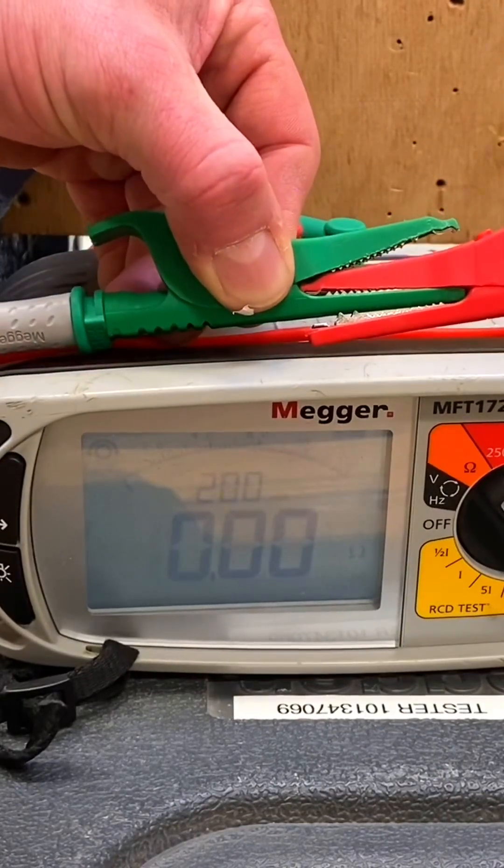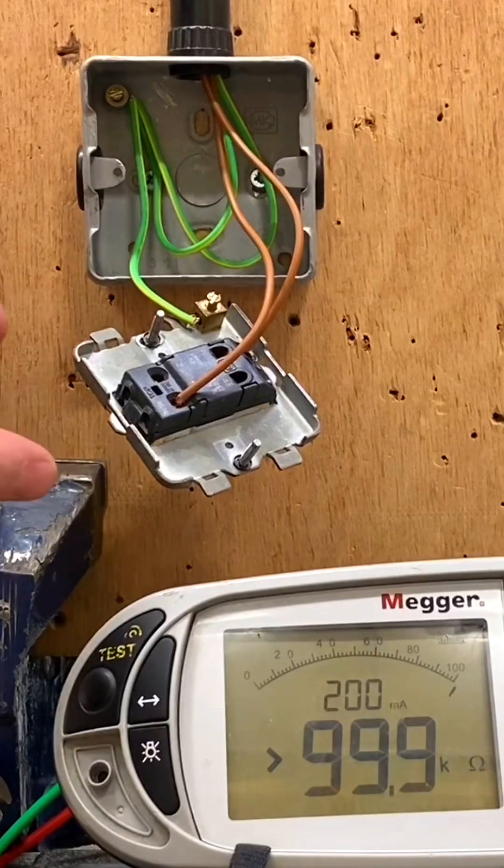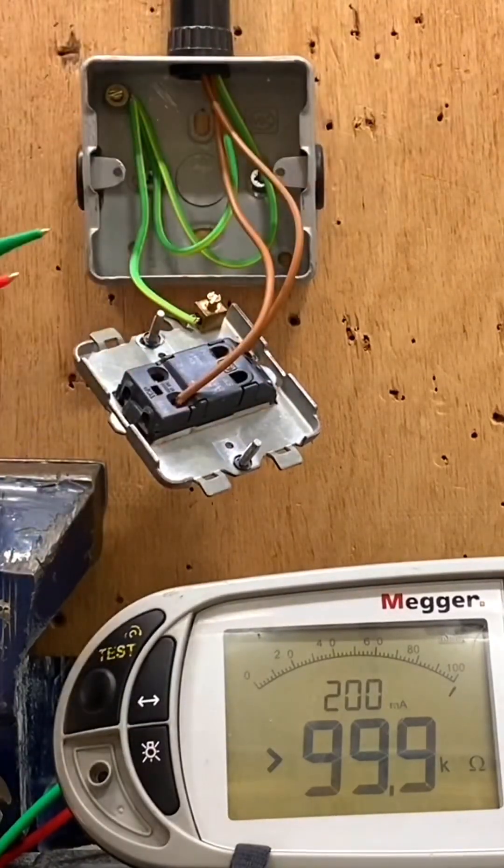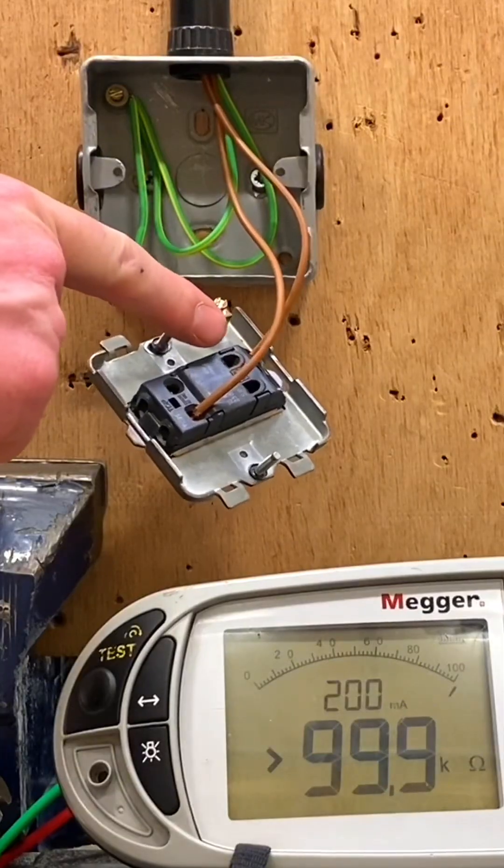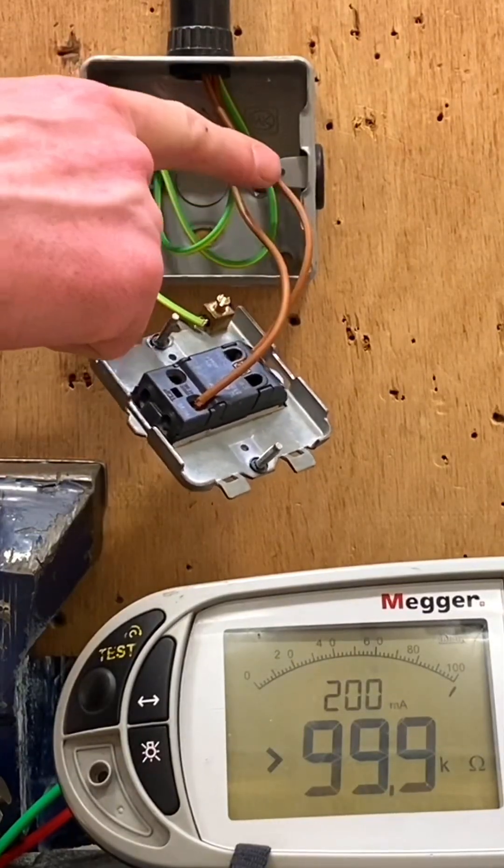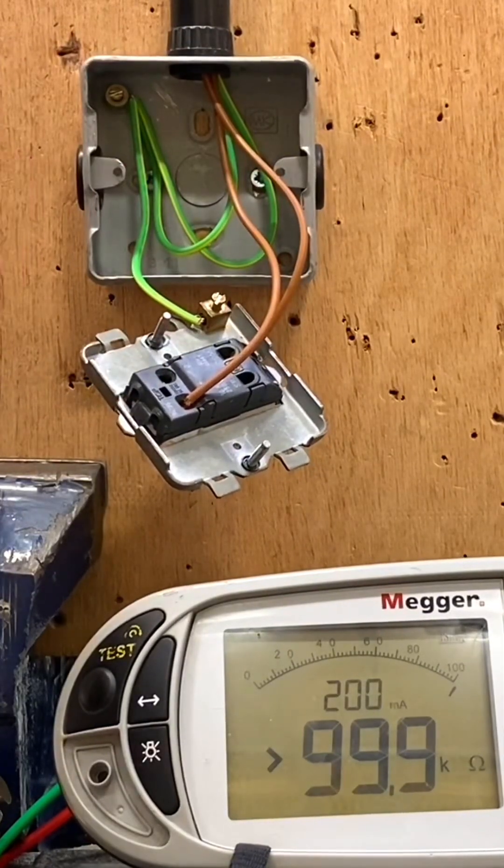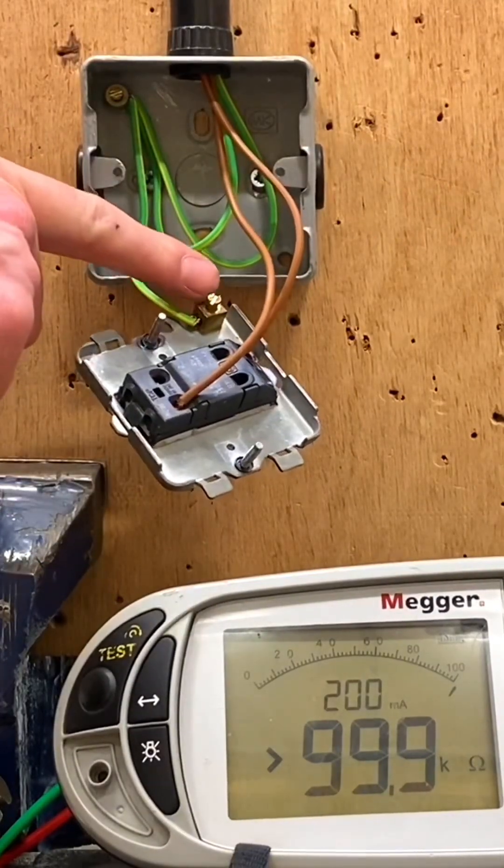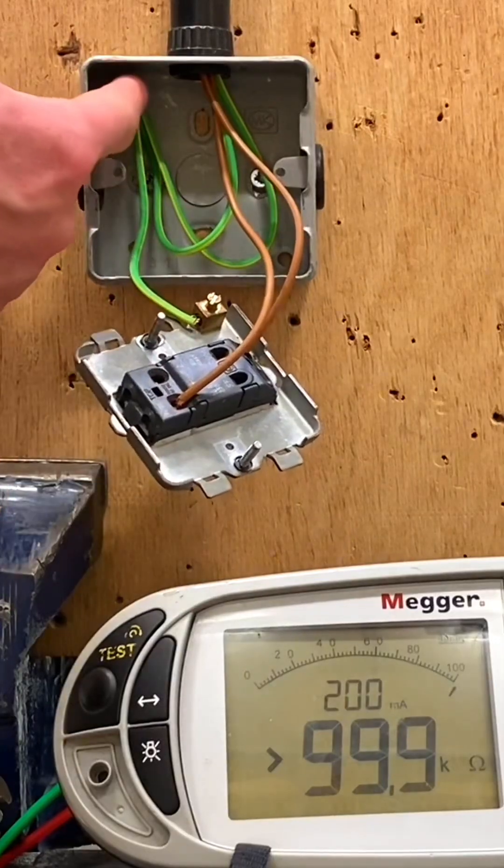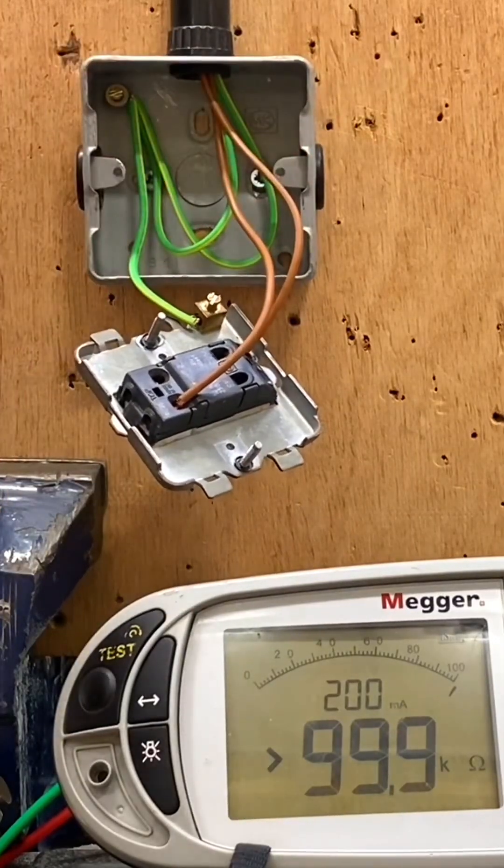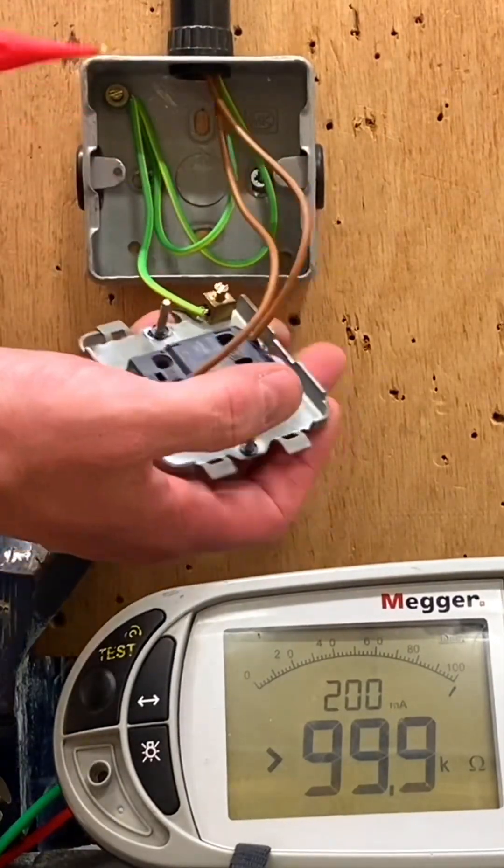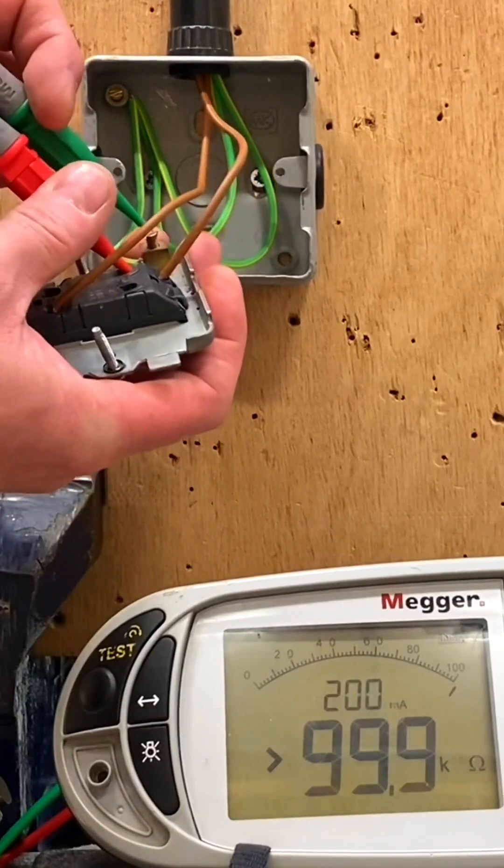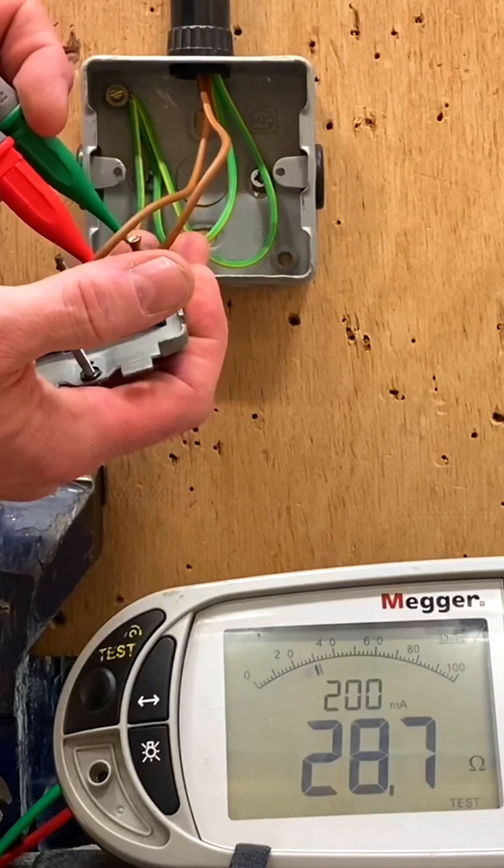I'm going to connect into the common of the switch - this brown conductor being the permanent line from the consumer unit. The other brown out of L1 is the switching line to the light. I'll connect to the earth terminal, the frame, the earth terminal, and the box to prove that all are connected to the CPC. I'm in common and onto the earth terminal at the same time, and we get 0.2 of an ohm.